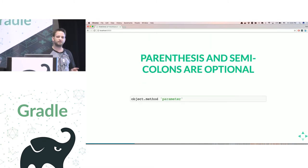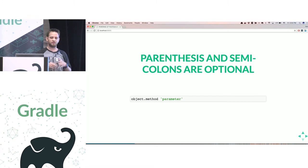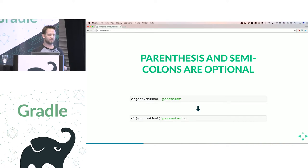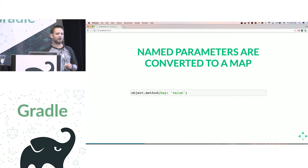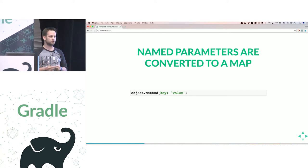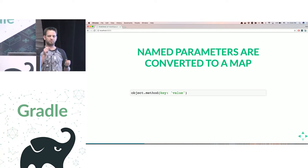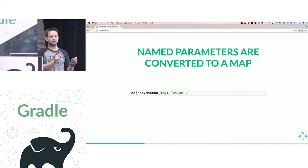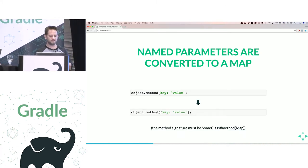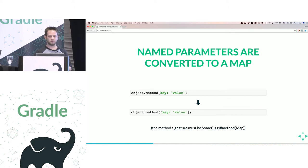First, when you have a method that has at least a single parameter, the parentheses are optional. Groovy sees it with parentheses implicitly. Second, we have the concept of named parameters in Groovy — you can tell Groovy you want a parameter named key to be a value, and this gets implicitly converted to a map. As long as the method signature supports this, you can do named arguments.